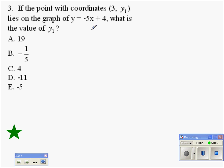We see y equals negative 5x plus 4 is a linear equation. We know that the point 3 comma y1 is a point that lies on its graph.